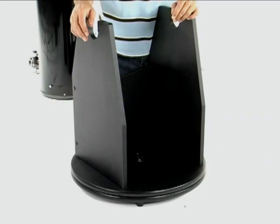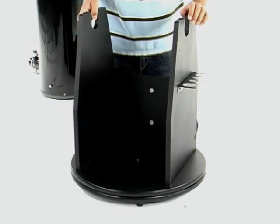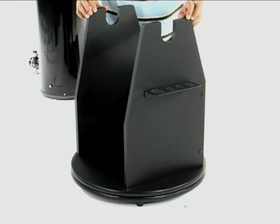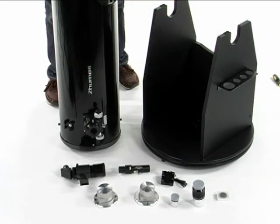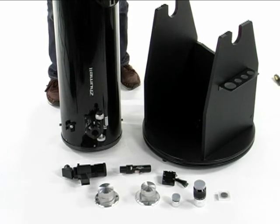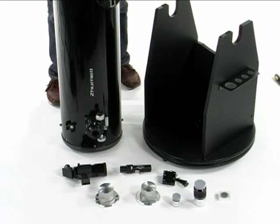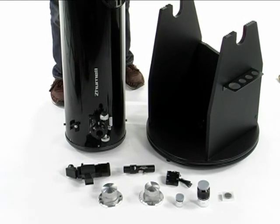All right, and now we are on to step two which will be the OTA. Off to the left of me we have our completed base from step one. Right here we have the OTA, the big Dobsonian.